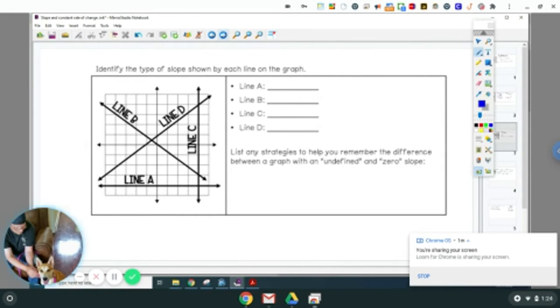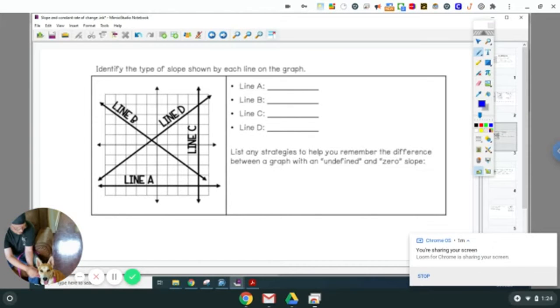So what we're going to do is we're going to identify these lines to figure out if they have a positive, negative, zero, or undefined slope. So line A is right here, and it's a flat, horizontal line, so it means it has a slope of zero. Line B is right here, and it's going downwards from left to right, so it means it's negative.